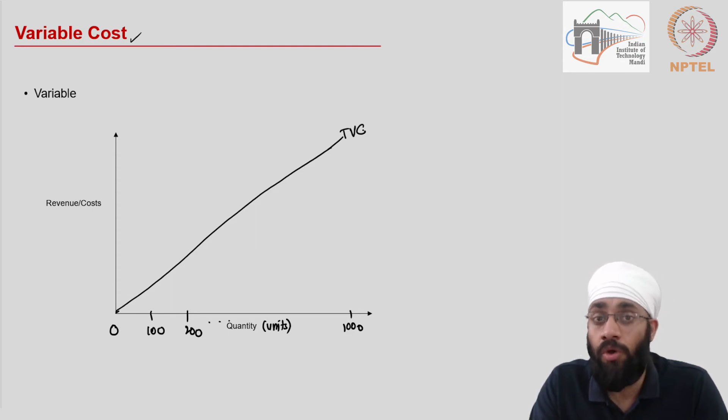If you have information on how the cost changes, of course you will use that information, but we start with the basic model. So what is the example of this variable cost? This is, for example, material cost.